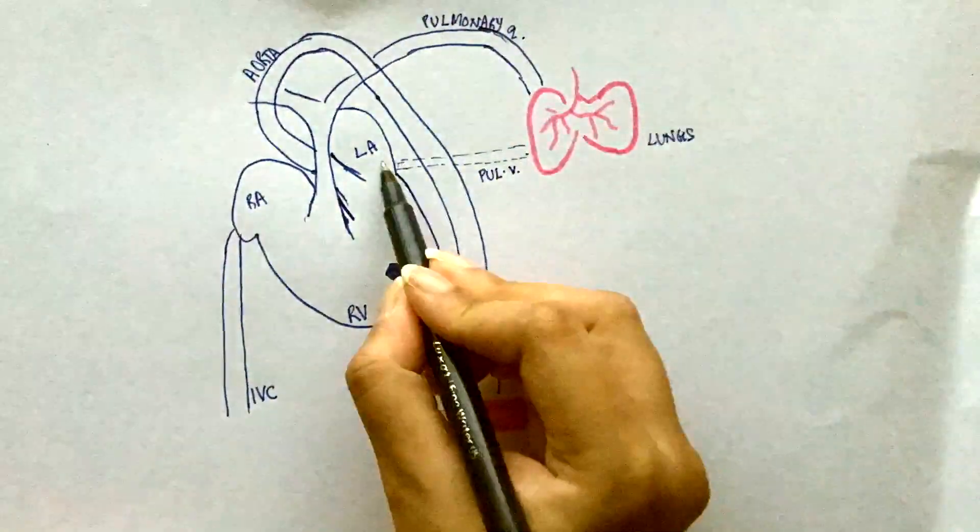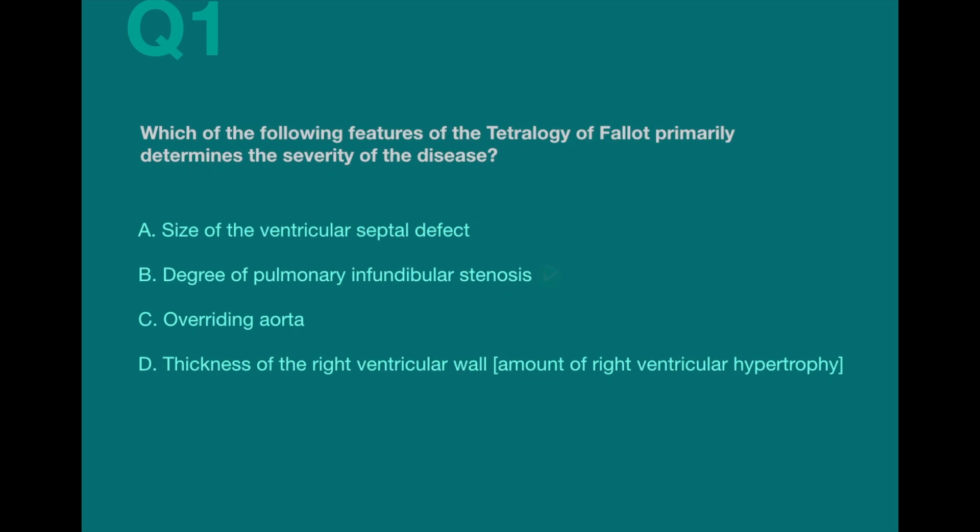Question number 1. Which of the following features of the Tetralogy of Fallot primarily determines the severity of the disease? A. Size of the ventricular septal defect, B. Degree of pulmonary and fundibular stenosis, C. Overriding aorta, D. Thickness of the right ventricular wall.